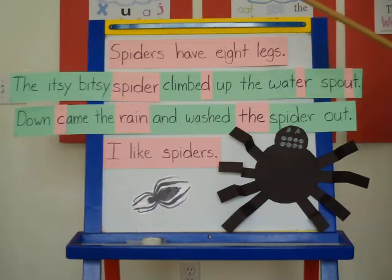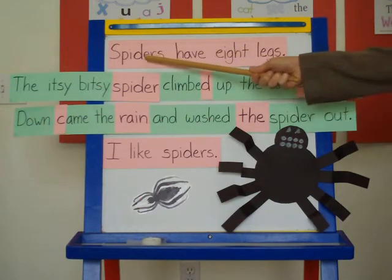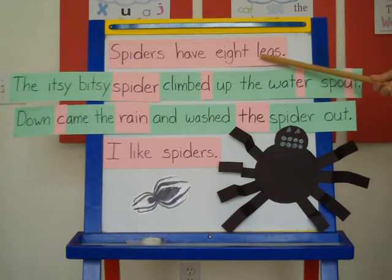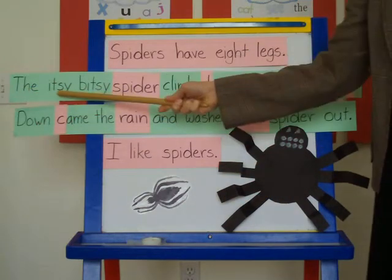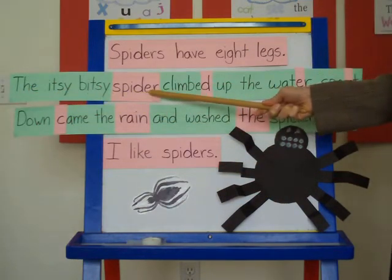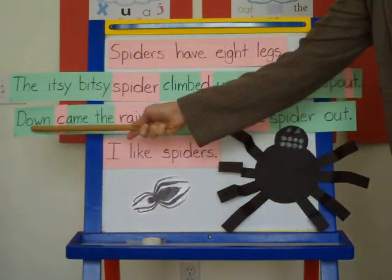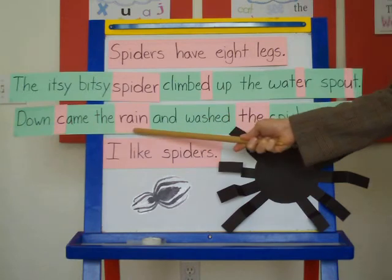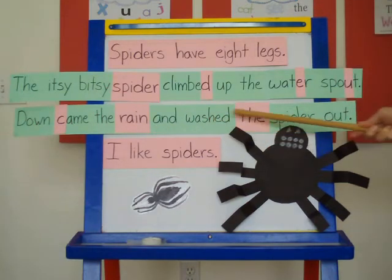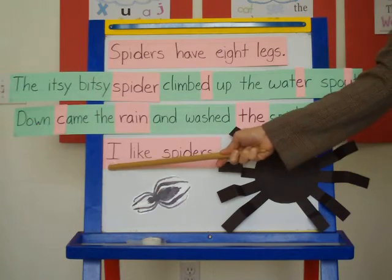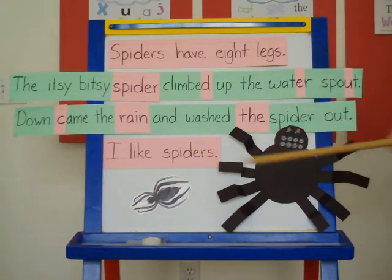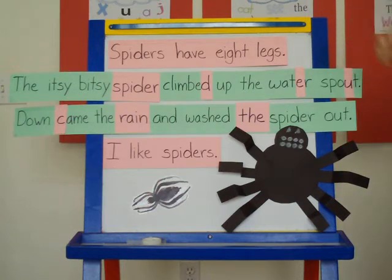Let's read what we have on the board. Spiders have eight legs. The itsy bitsy spider climbed up the water spout. Down came the rain and washed the spider out. I like spiders. Now we'll look at all of the pink to see where it belongs — is it a letter, a word, or a sentence?